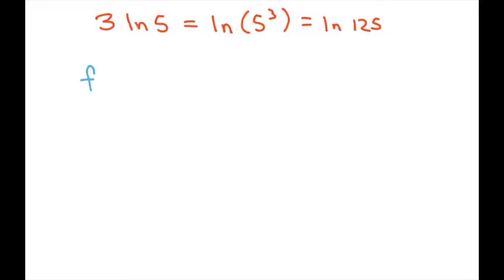So our actual derivative can be written as 5^(3x) times ln 5 times 3, which equals 5^(3x) ln 125.